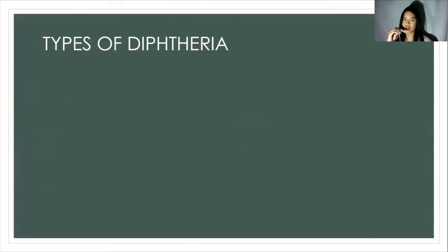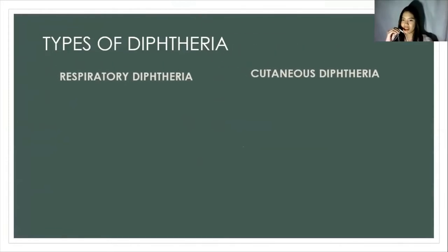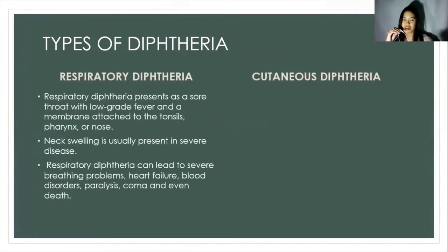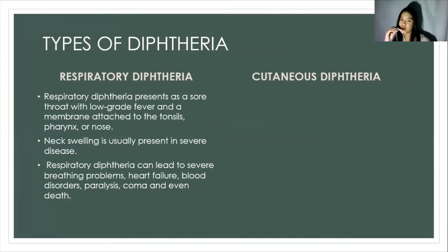There are two types of diphtheria. One is respiratory diphtheria and the other is cutaneous diphtheria. Respiratory diphtheria presents as a sore throat with a low-grade fever and membrane attached to the tonsils, pharynx, and the nose. Neck swelling is usually present in severe disease. Respiratory diphtheria can lead to severe breathing problems, heart failure, blood disorder, paralysis, coma, and even death.